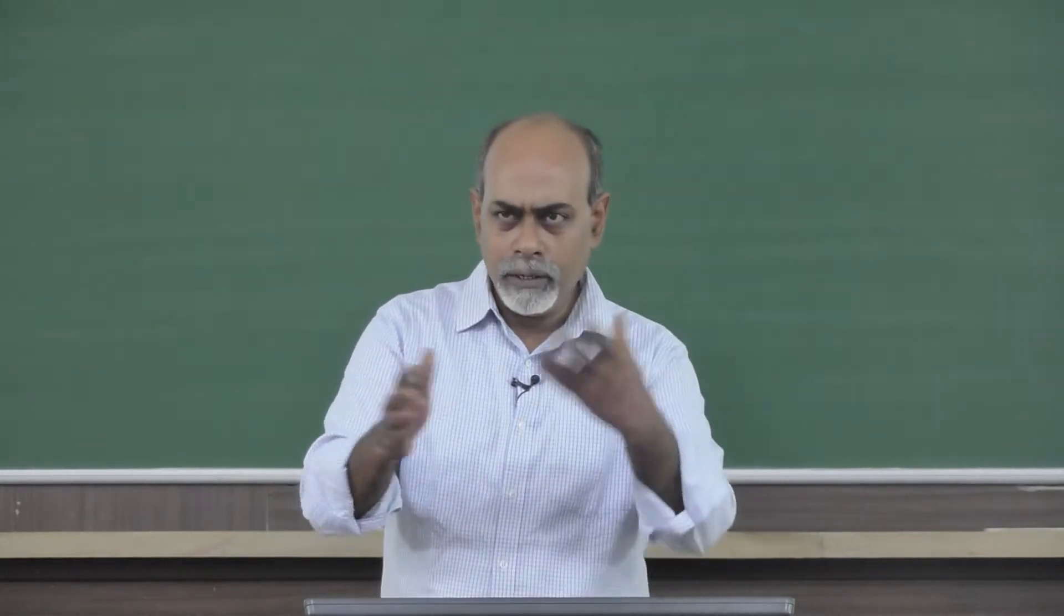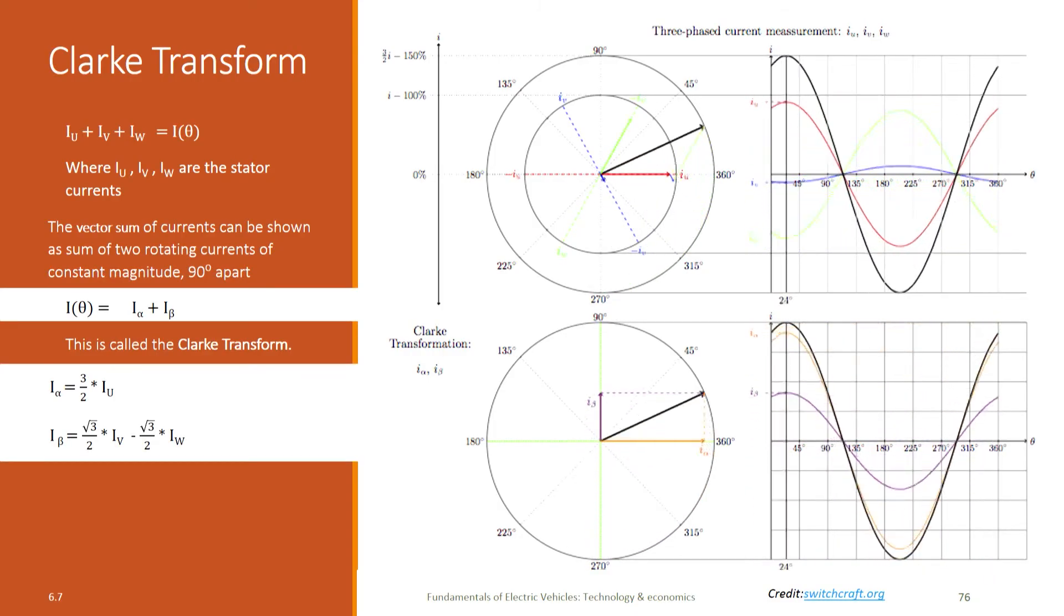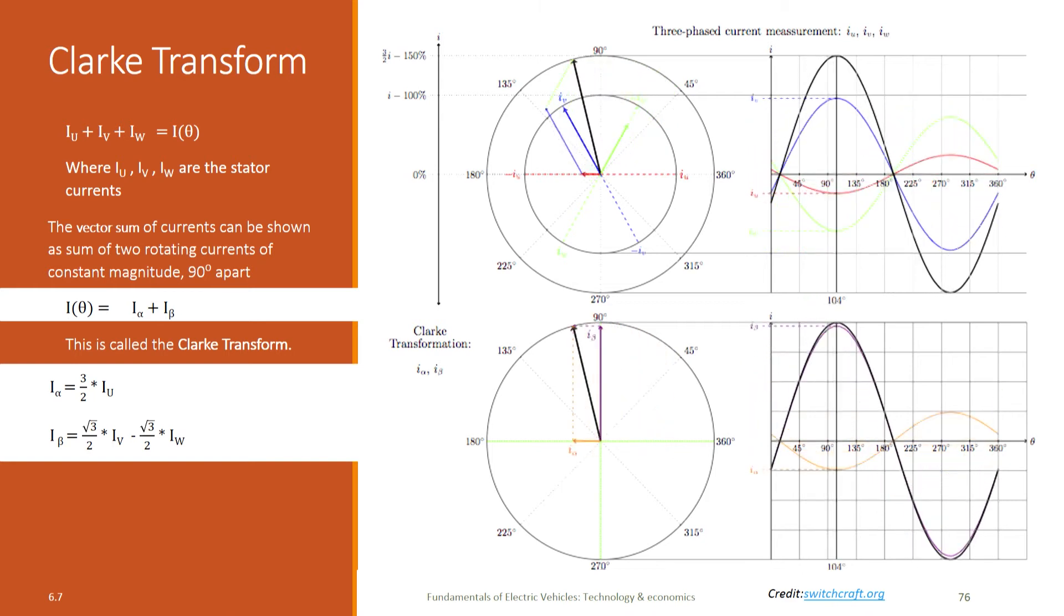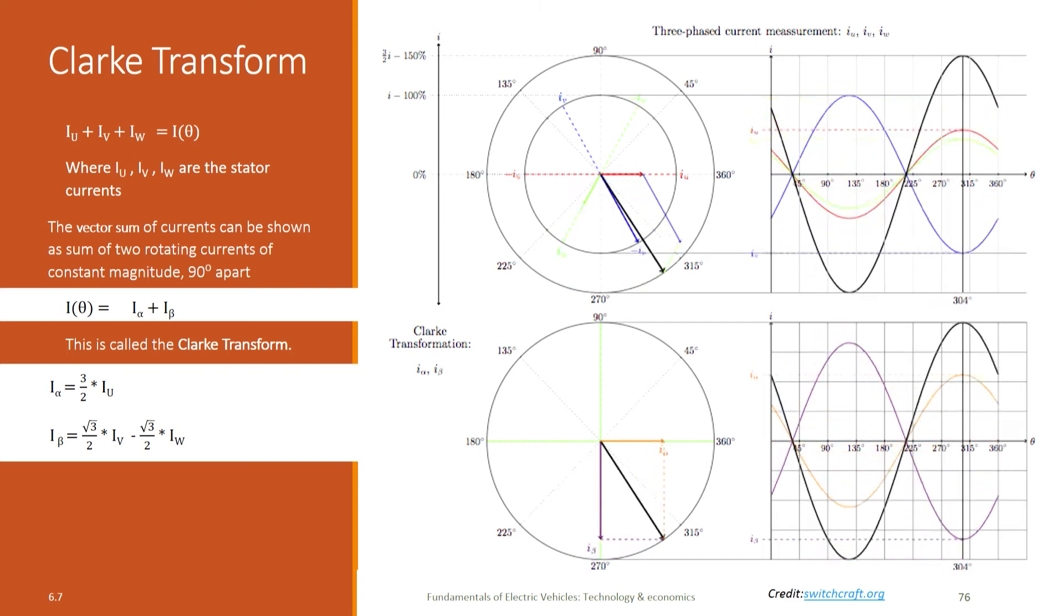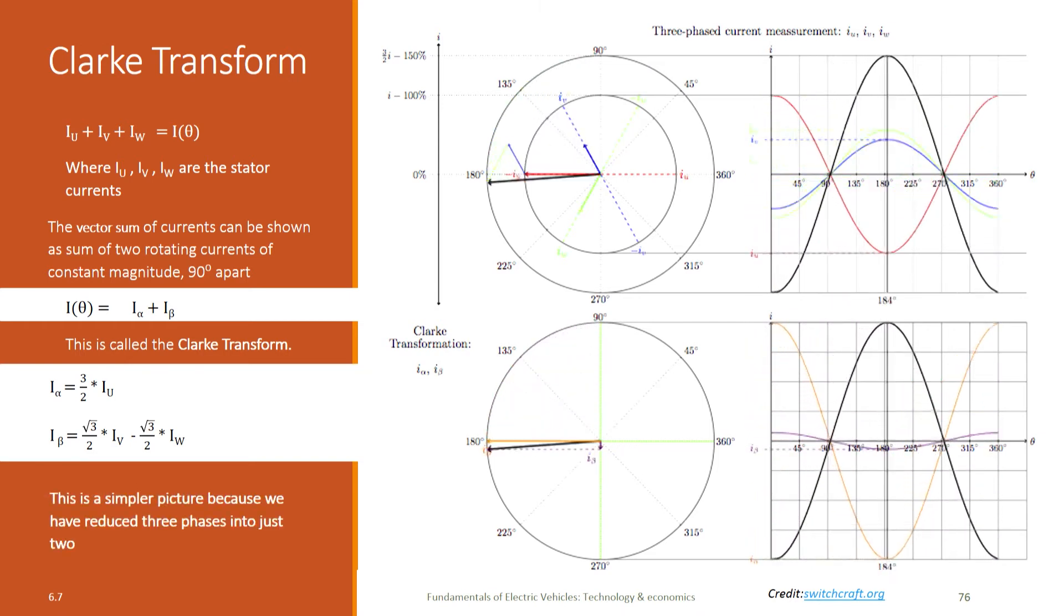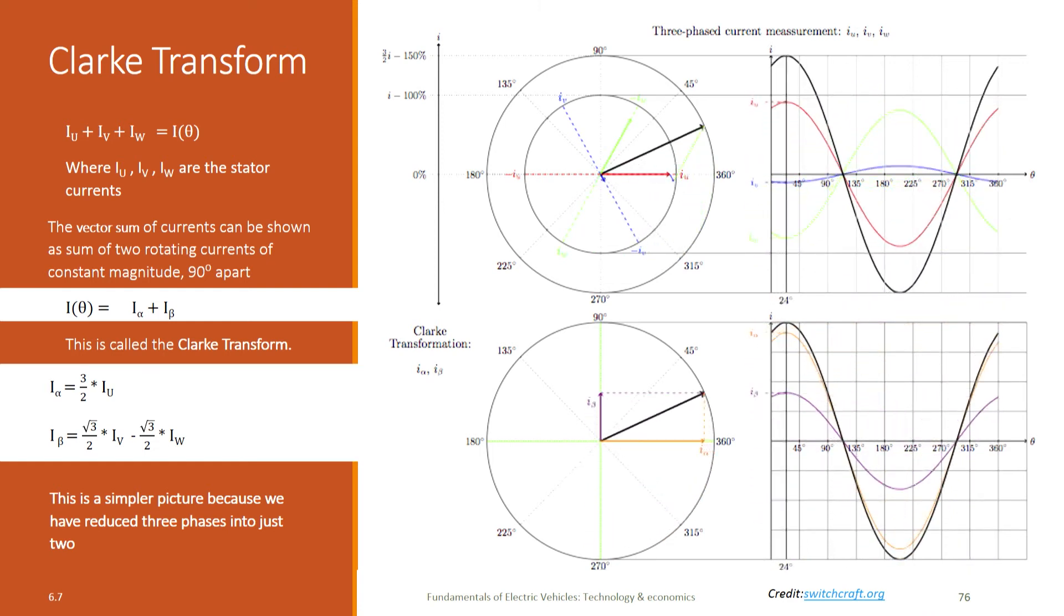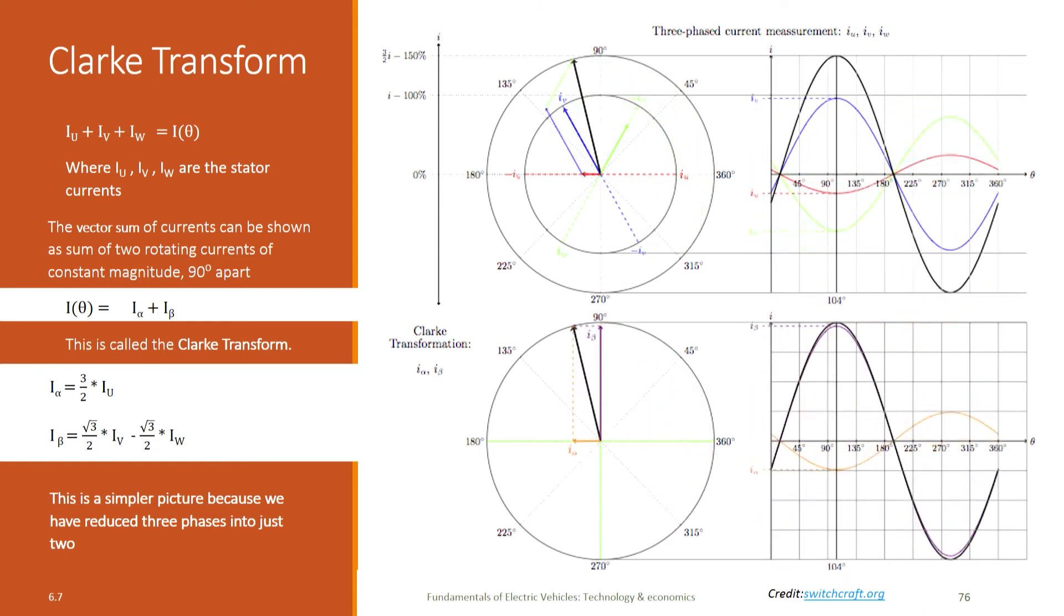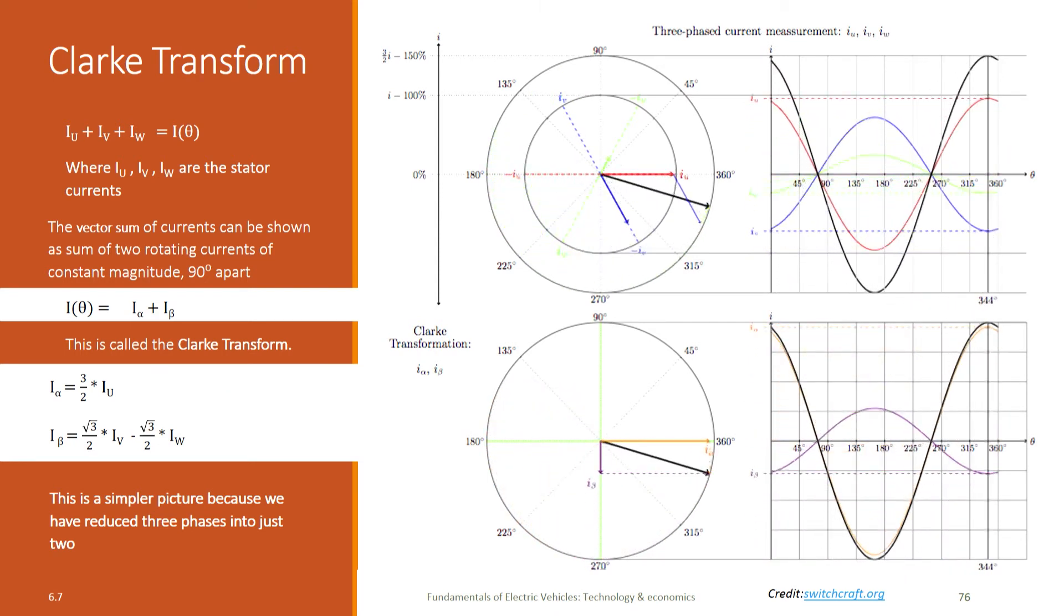And this is called the Clark transform. With a little bit of trigonometry, I will not burden you with all the derivation but you can derive it yourself or look at standard references. You will find that the alpha component and beta component are related to the U, V and W phases - phase currents - by this trigonometric relationship. This is a somewhat simpler picture than what we started out with in the beginning because we have only two phases instead of having three phases. So this is the first step in the simplification.